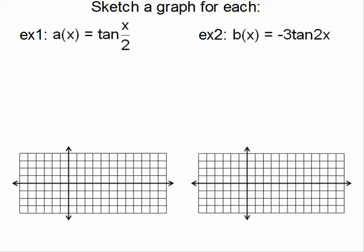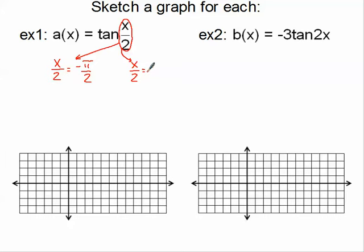Let's look at some examples of tangents and cotangents in this tutorial. Example 1: we've got the tangent of x over 2. This is a tangent function, so I'm going to take the bx minus c part — x divided by 2 — and set it equal to negative pi over 2 and positive pi over 2. Those are the original two asymptotes for the tangent graph.